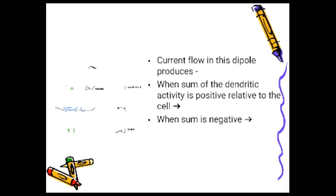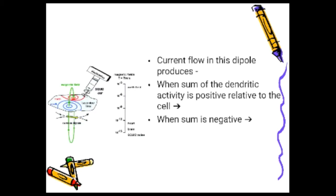Current flow in this dipole produces wave-like potential fluctuations in a volume conductor. When the sum total of dendritic activity is positive relative to the cell body, the cell is hyperpolarized or less excitable. When the sum total of dendritic activity is negative relative to the cell body, the cell is depolarized and hyper-excitable.